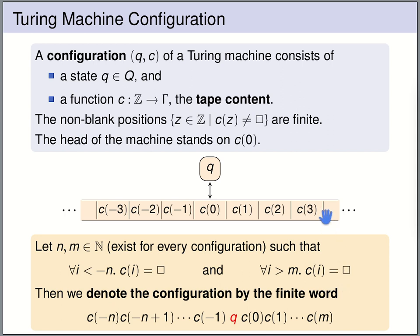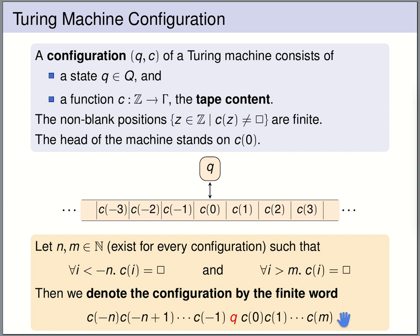We denote a configuration by the finite word c(-n), c(-n+1), ..., c(-1), then q (the current state), then c(0), c(1), ..., c(m). The state q stands in front of the symbol currently being read, so the symbol after q in the word is where the read-write head stands. Since all other symbols are blank, this word fully determines the configuration — we know the state and the tape content, and everything else is blank.